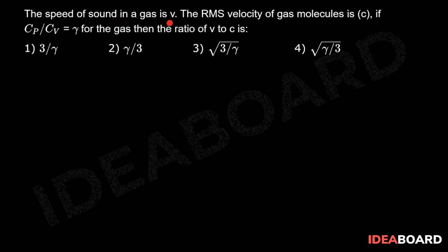The speed of sound in a gas is v. The RMS velocity of gas molecules is c. If cp by cv is equal to gamma for the gas, then the ratio of v to c is equal to...